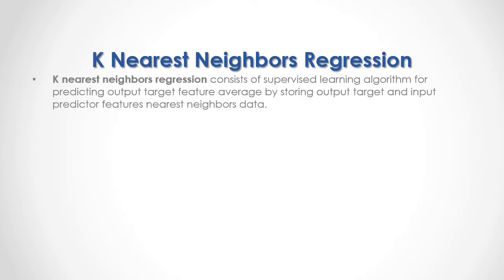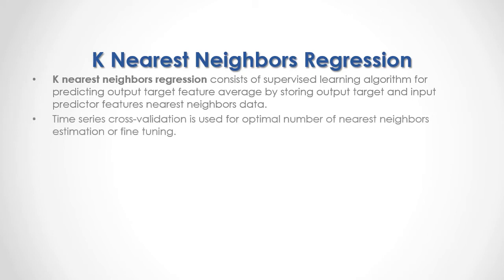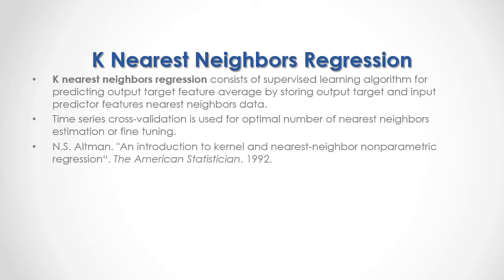K-Nearest Neighbors Regression consists of a supervised learning algorithm for predicting output target feature average by storing output target and input predictor features nearest neighbors data. Time series cross-validation is used for optimal number of nearest neighbors estimation or fine-tuning. For full reference, I recommend that you read Altman, 'An Introduction to Kernel and Nearest Neighbor Non-Parametric Regression,' published in the American Statistician in 1992.